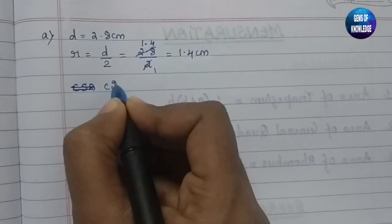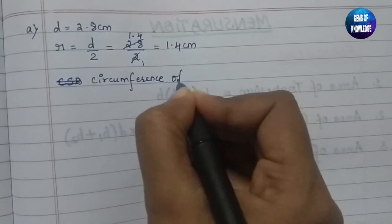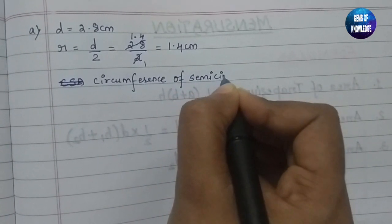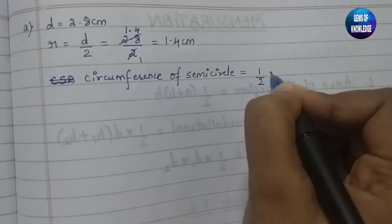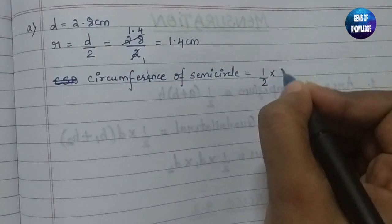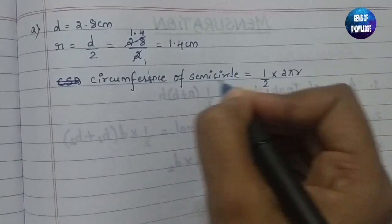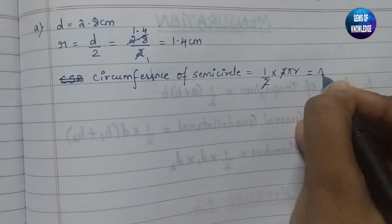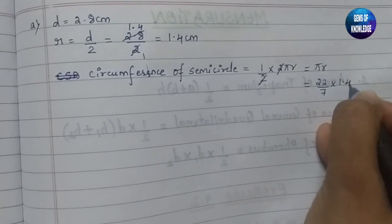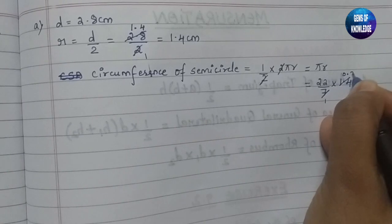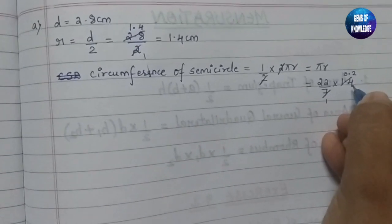We need to find the circumference. The outer part of the circle is known as the circumference. For a semicircle, the circumference is half of the full circle circumference: half of 2πR, which simplifies to πR. Substituting π as 22/7 and R as 1.4, we get 22/7 into 1.4. The 7 and 1.4 simplify: 7 into 0.2 gives 1.4, so we are left with 22 into 0.2, which equals 4.4 cm.